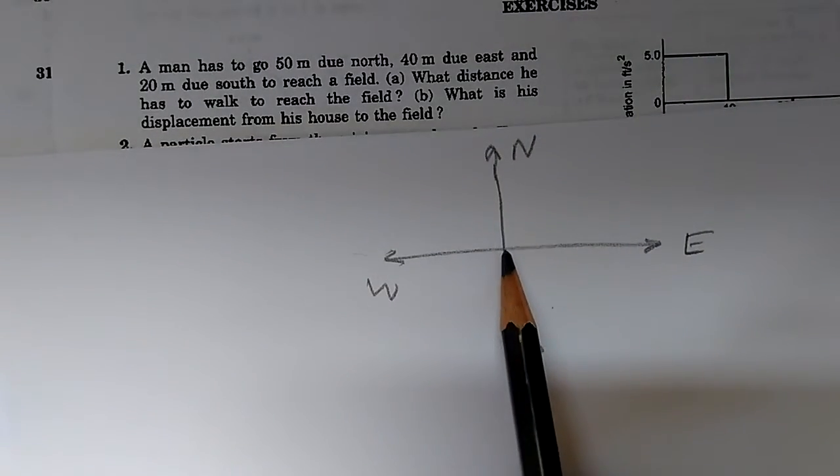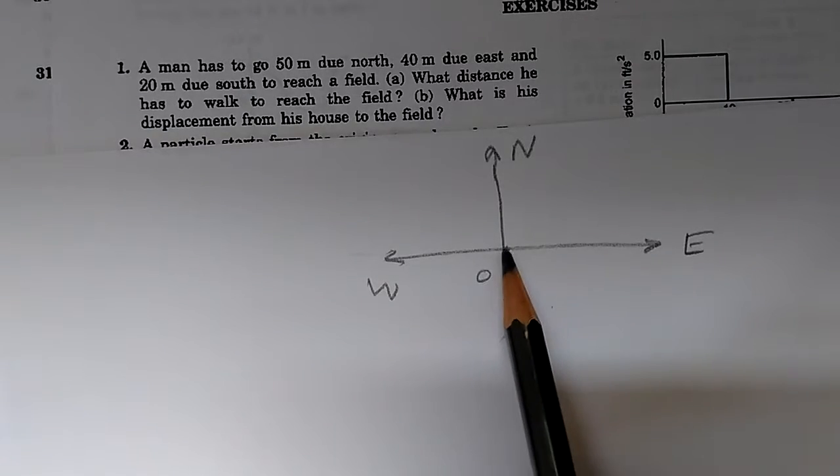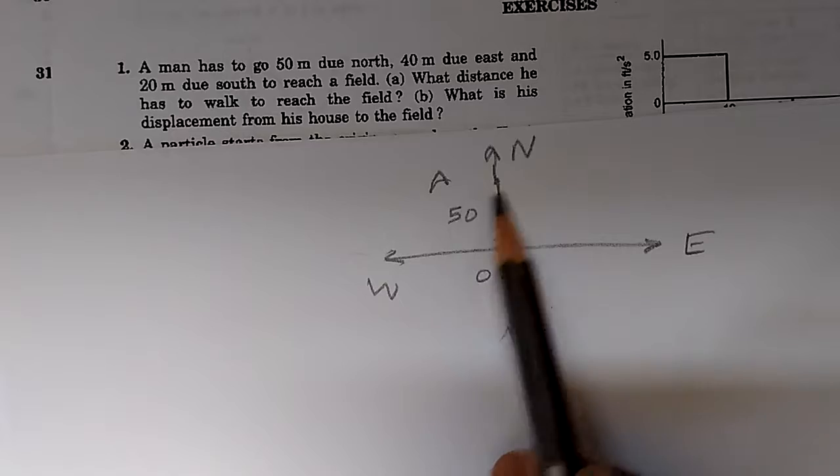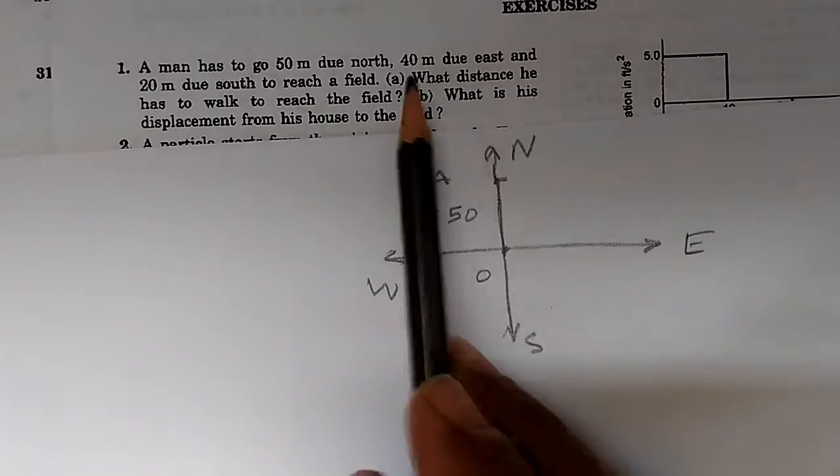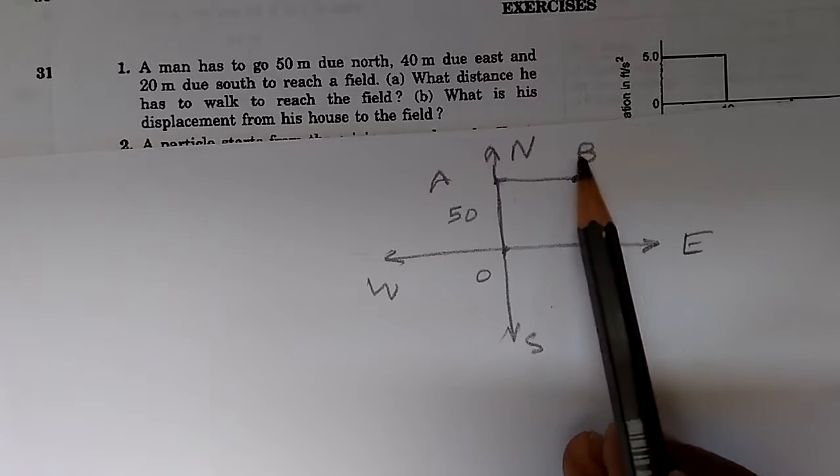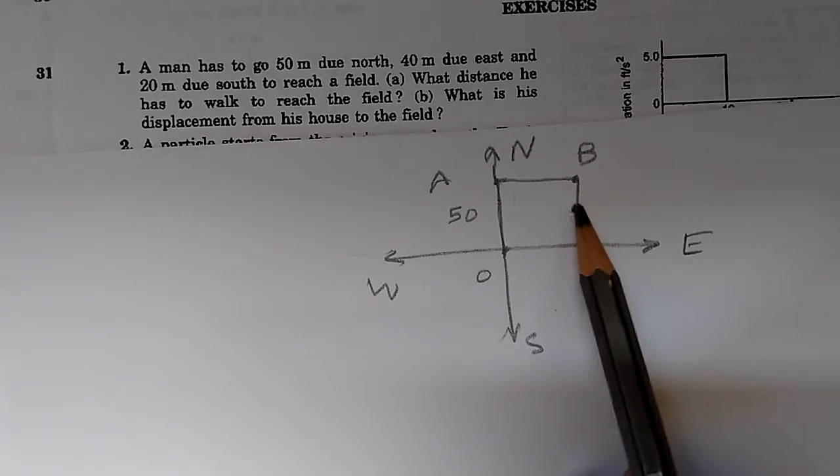So it starts with 50 meters due north. It starts from the origin O, goes to let's say this point A, and this is 50 meters to the north. Then goes 40 meters due east, so it goes 40 meters to this point, let us call it B. And then from here it reaches here, let's call it C.